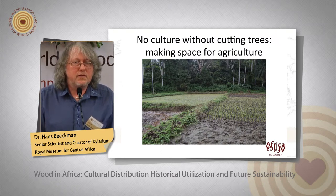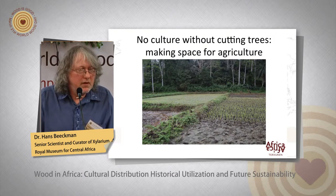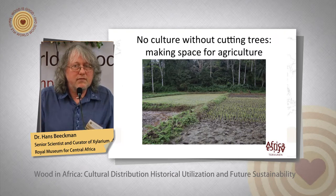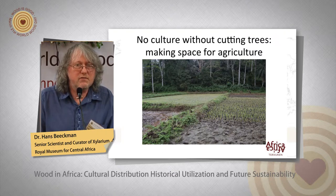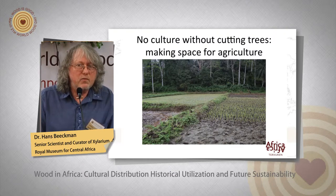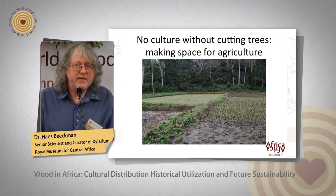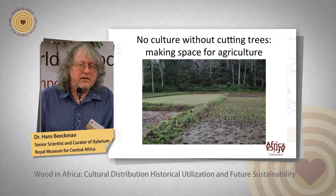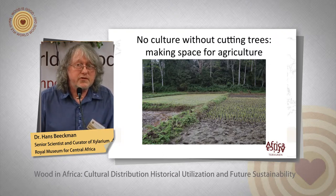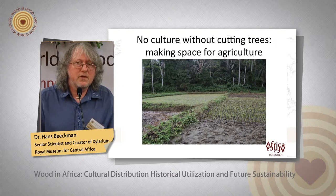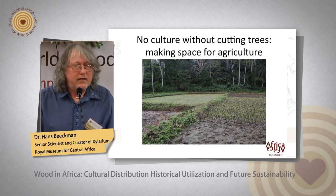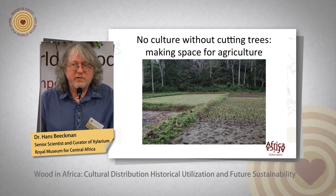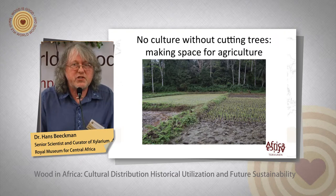To bridge from nature to culture, you need to cut trees — this bridge is made of wood. First you have to make space; without space you can't do agriculture. The word 'culture' refers to the Latin word cultura, which means the turning of the topsoil — the practice of agriculture. In extension, there are other words like apiculture (bees), pisciculture (fish), and silviculture — the growing of trees or managing forests to obtain the material you need. Without cutting trees, no culture, no material culture.